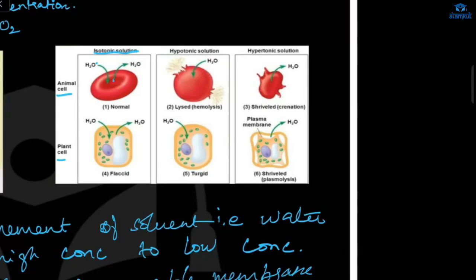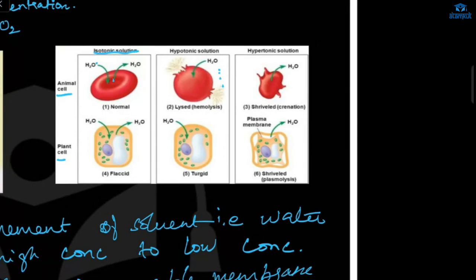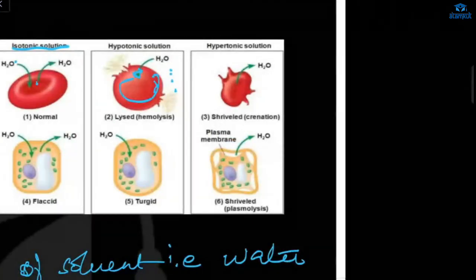Now in hypotonic solution, what happens here? The surrounding concentration has more water outside, and the cell is having less water. So water will get inside, and the cell will be filled and it will burst in case of animal cell. This is called lysis or hemolysis. And in case of plant, the water will get inside, but the cell will not burst because it has cell wall. This condition is called turgid.